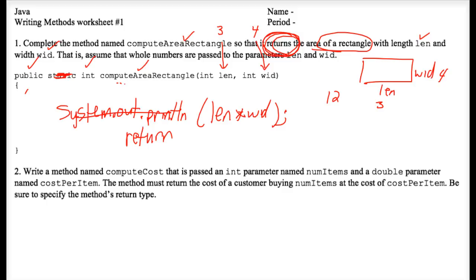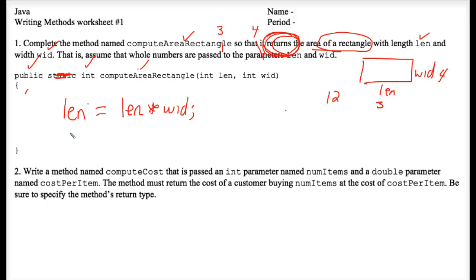Another common wrong answer here that I see is some people try to reuse the variable or one of the parameters len and wid as a local variable. So they might do something like this: len equals len times wid, and then they return len. This would work but it's horrible style.